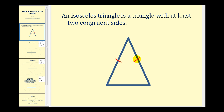It does follow from the isosceles triangle theorem that the angles opposite the congruent sides would also be congruent. So it's not part of the formal definition of an isosceles triangle, but it is true that this angle would be congruent to this angle here.